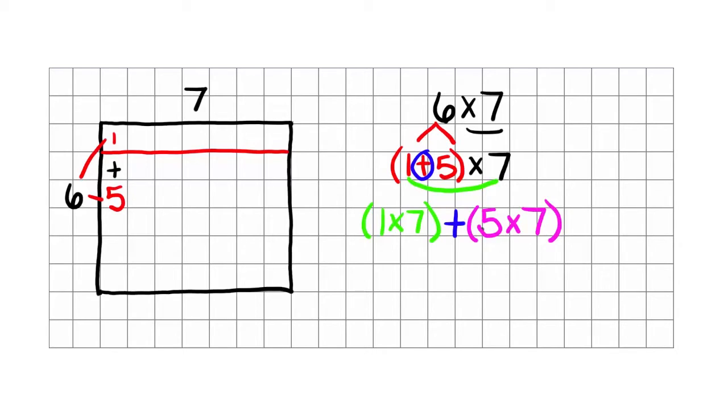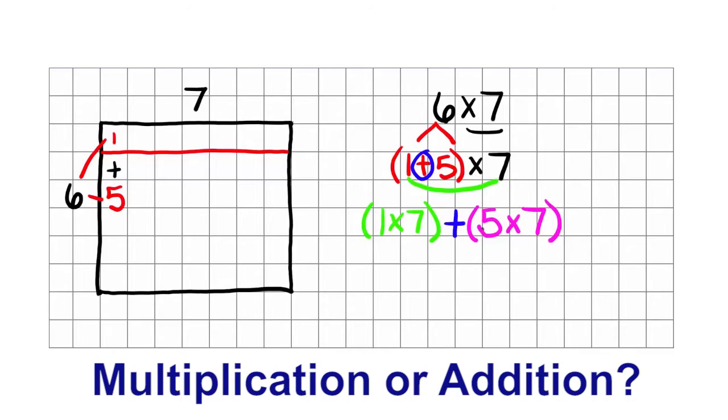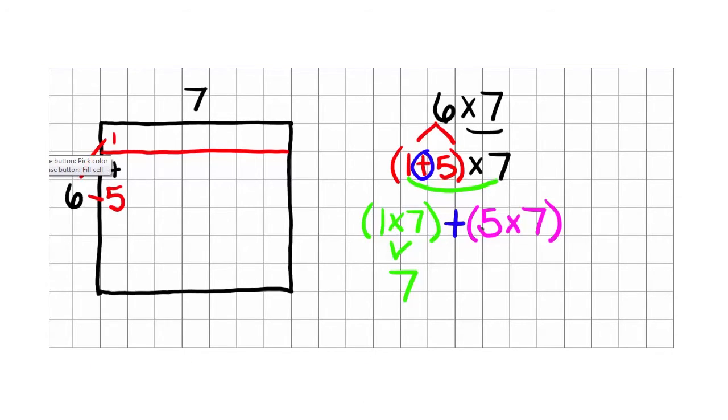Now I need to think about order of operations. Which comes first, multiplication or addition? Remembering that we are finding the area, that helps me remember that I need to multiply first. So 1 times 7 is 7, 5 times 7 is 35, and then I add those two products together for a total of 42.